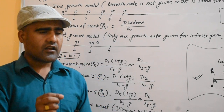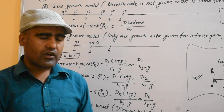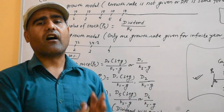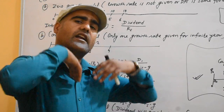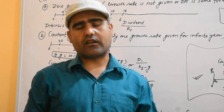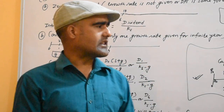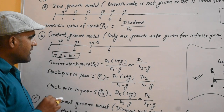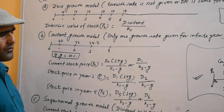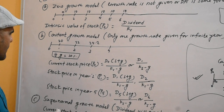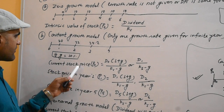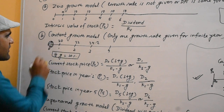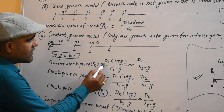The growth rate will grow by 10% for 4 or 5 years. In an infinite year scenario, you will increase by one constant growth rate. This is the constant growth model. The current stock price is P0, and the current dividend is D0.